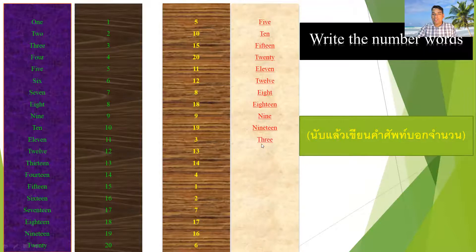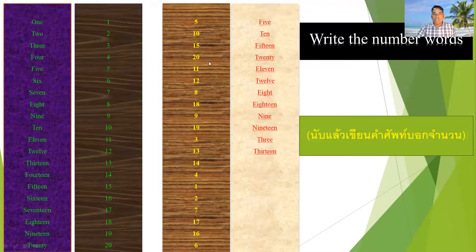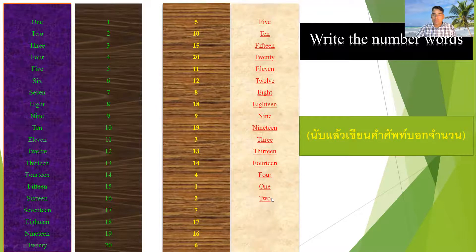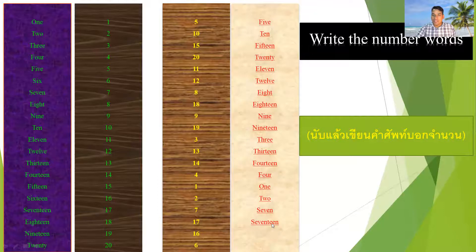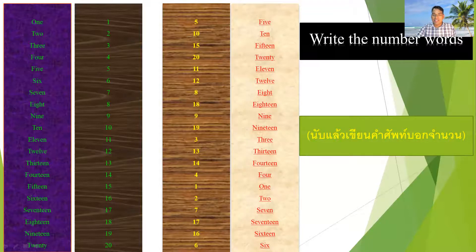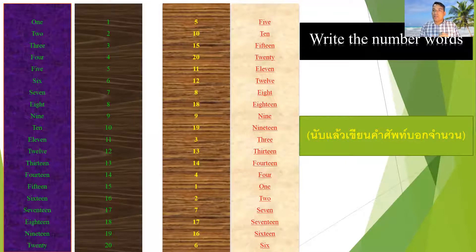Three is T-H-R-E-E, and thirteen is T-H-I-R-T-E-E-N. Fourteen — just find four, then add T-E-E-N, making F-O-U-R-T-E-E-N. Easy! One is O-N-E, two is T-W-O. Seven is S-E-V-E-N, and seventeen is S-E-V-E-N-T-E-E-N — very easy to remember, just add T-E-E-N. Next, sixteen — S-I-X-T-E-E-N, and six is just S-I-X. Six and sixteen — just add T-E-E-N to make sixteen. I hope you understand from my teaching.